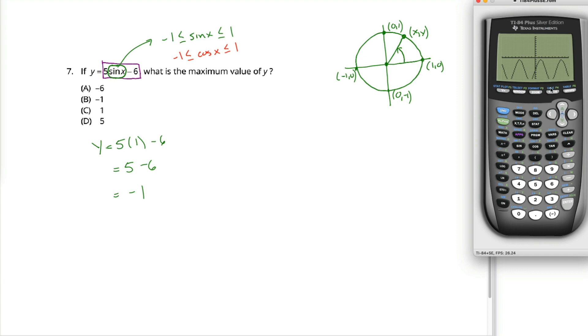It's under the calculate menu. So since calculate is in blue above the trace key, we hit this blue key second and then trace to get into the calculate menu. We've already used this menu to find the intersection of two lines in a previous problem. In this case, we want to find a maximum value, so we hit 4.